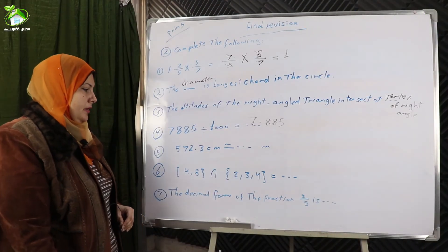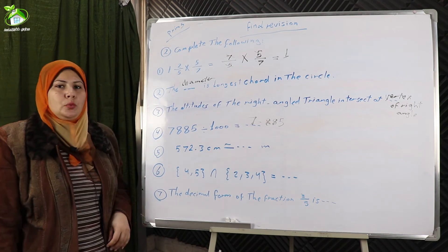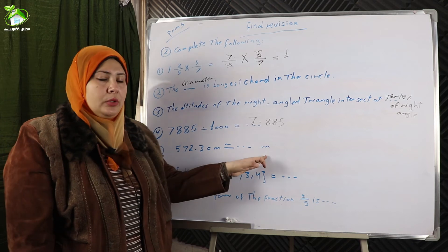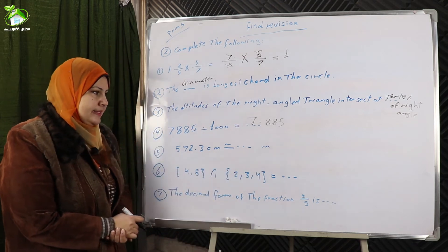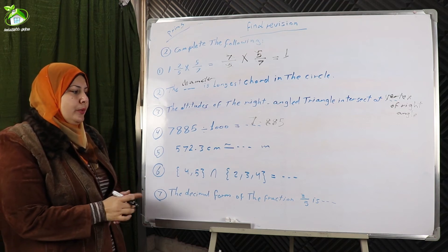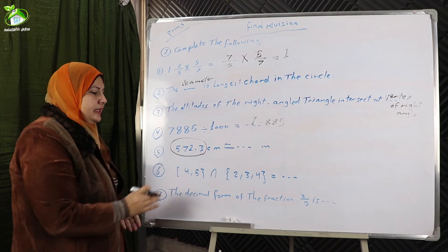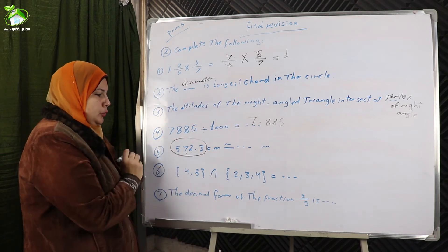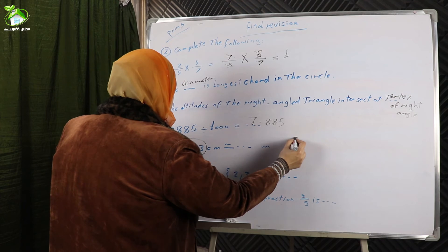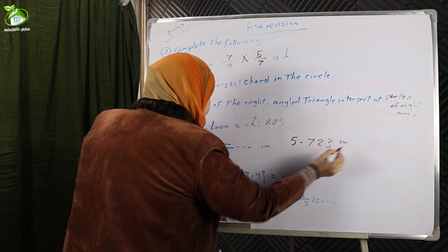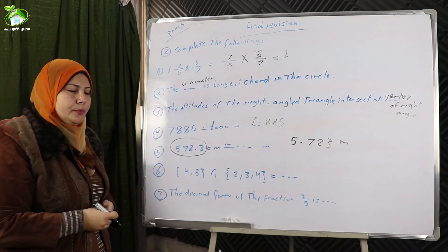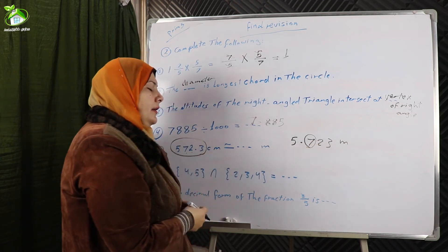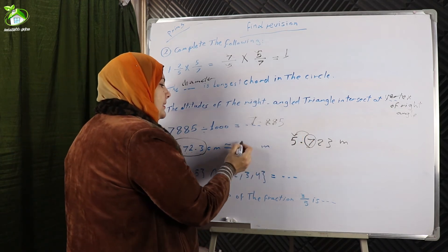Number five: 572.3 centimeters rounded to the nearest meter. We convert from centimeters to meters by dividing by one hundred — moving the decimal point two places to the left. The result is 5.723 meters. Rounded to the nearest meter, the tenths digit is seven, which is a large number, so five becomes six meters.